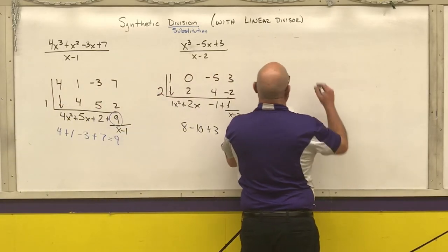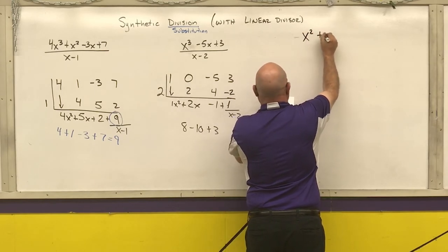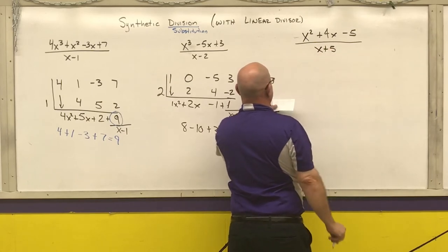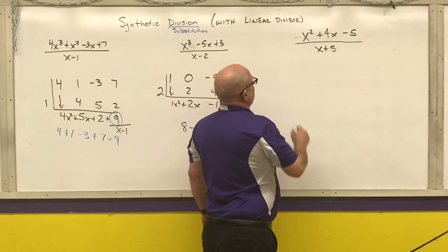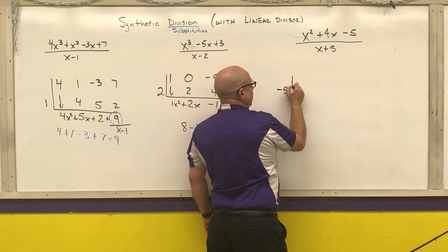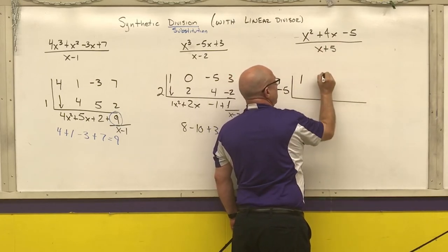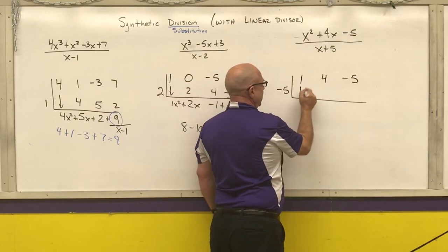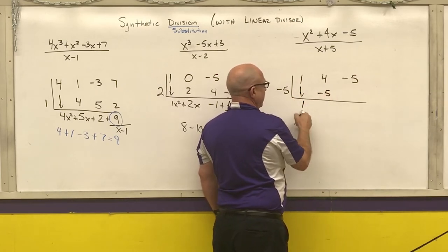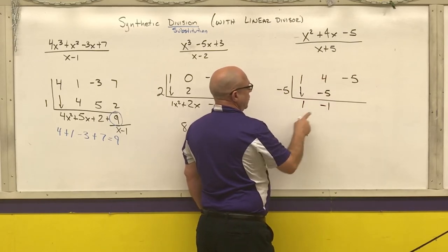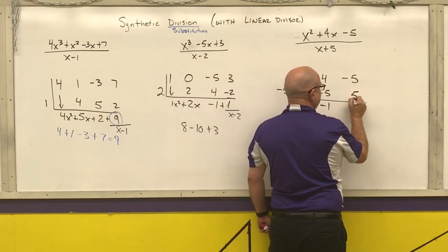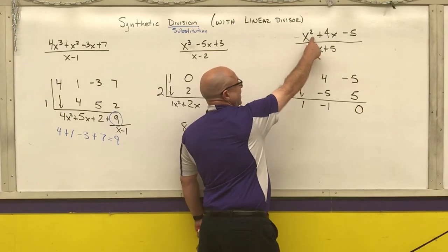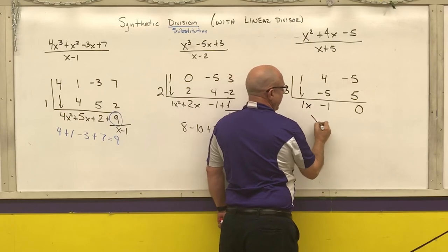The next one: x squared plus 4x minus 5 over x plus 5. Set this equal to zero and solve — that gives me negative 5. Coefficients: 1, 4, negative 5. Copy, multiply — 1 times negative 5 is negative 5 — add: 4 minus 5 is negative 1. Multiply: negative 1 times negative 5 is 5. Add: negative 5 plus 5 is 0. I do not have a remainder, so 1 degree less than x squared is x, and my final answer is x minus 1.